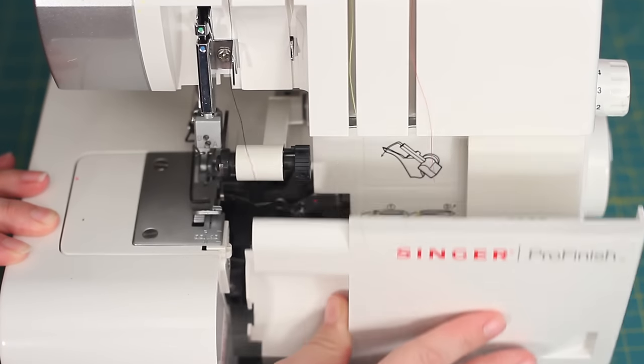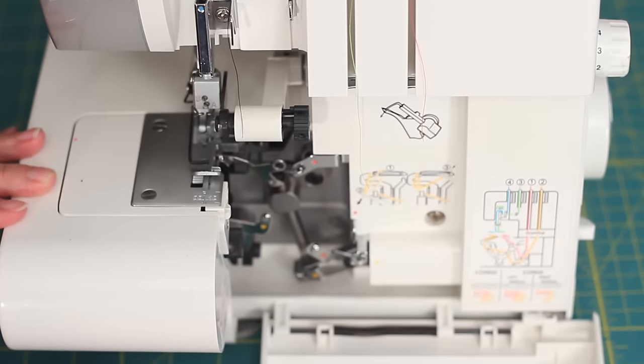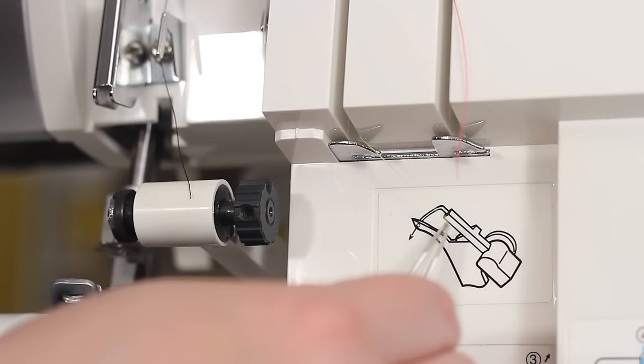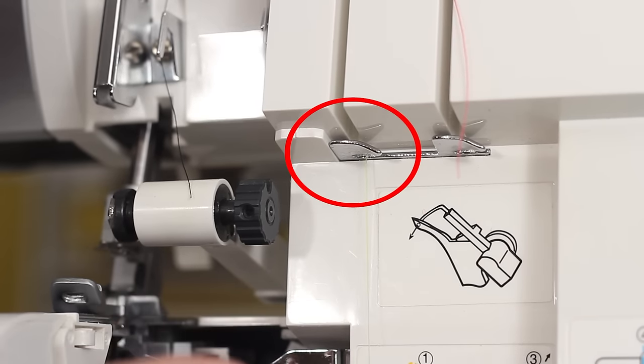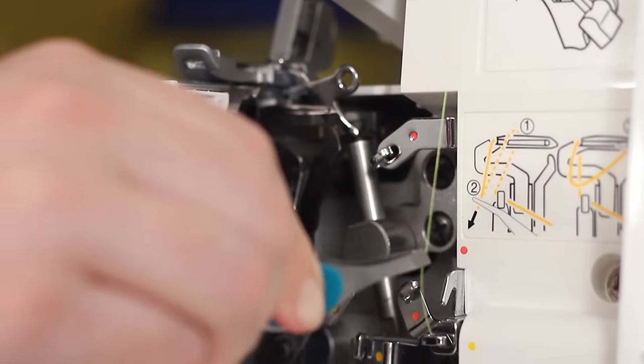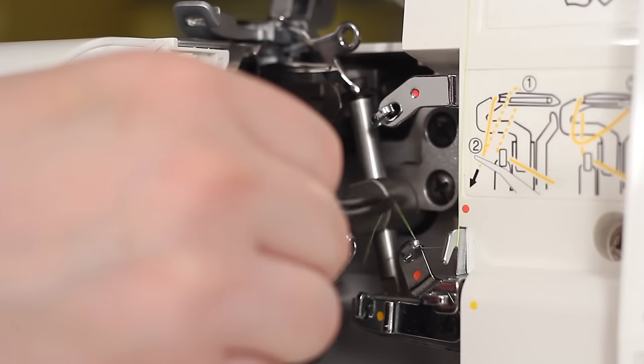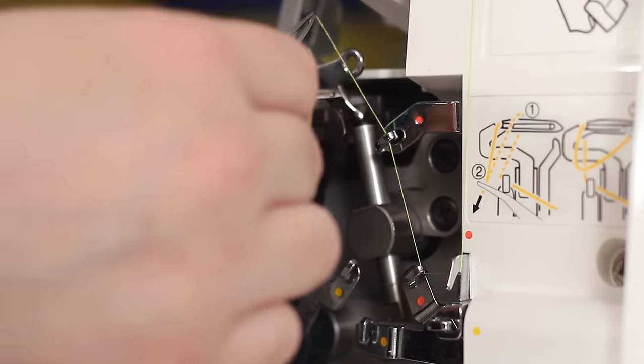So go ahead and open up your cover. Your needle should be in the highest position. Now with your tweezers, grab the upper looper thread, which for us is our green thread, and pass it behind the metal hook here. Then just follow the dots down, down, up, into the upper looper.